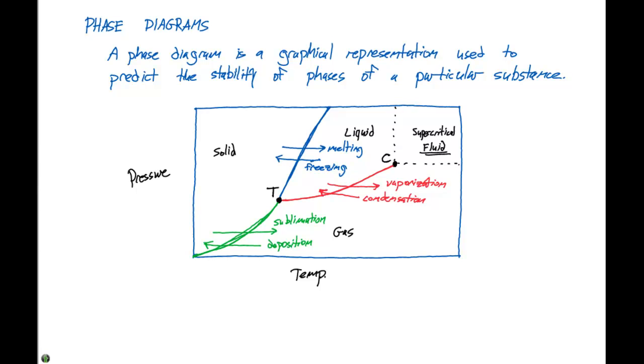This middle point in the graph that we abbreviate with a capital T, this is where all three curves intersect, and it's called the triple point. So our point T here, we refer to as a triple point.